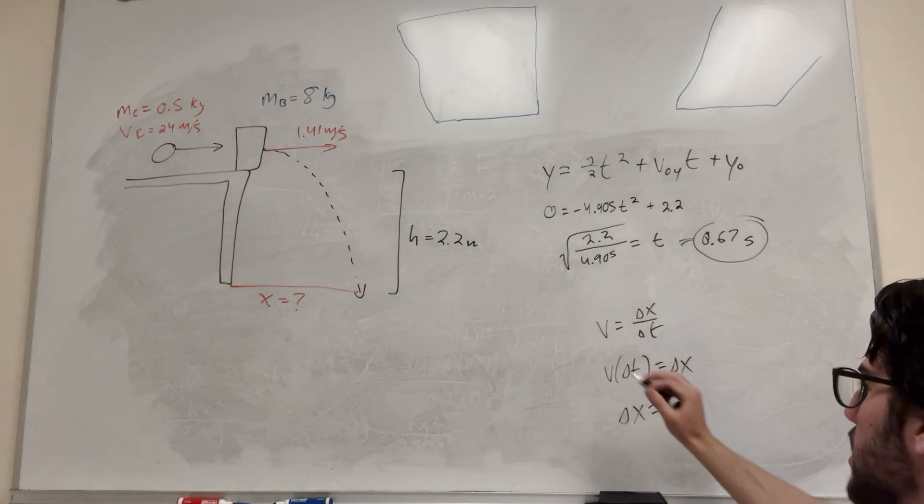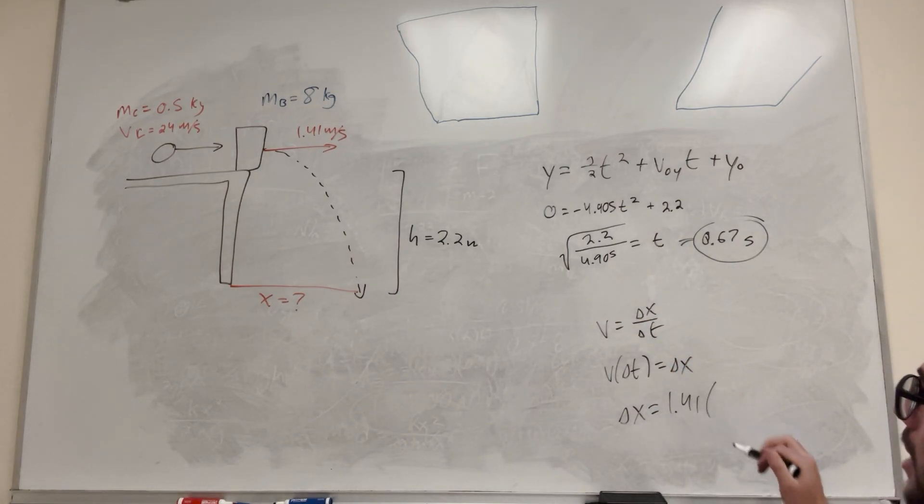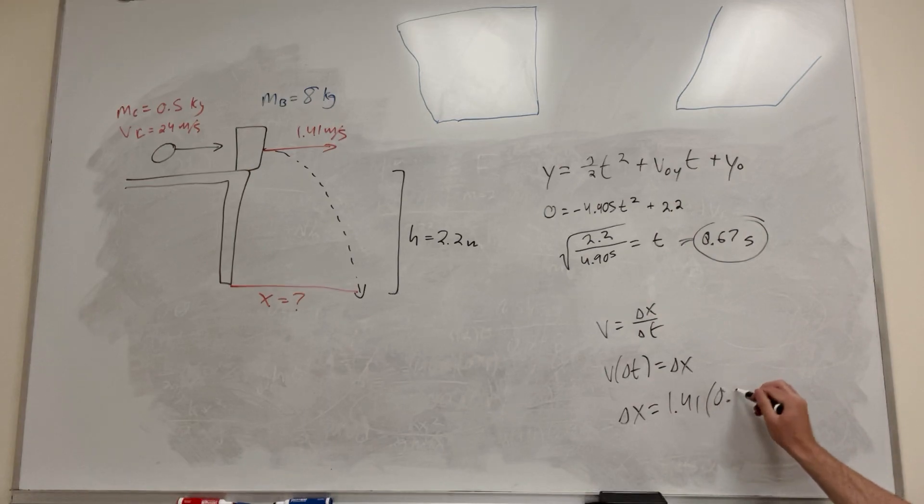So that means that delta x is going to be its velocity, 1.41 times the change in time, 0.67. And you multiply these together to get 0.94 meters. That's how far it goes.